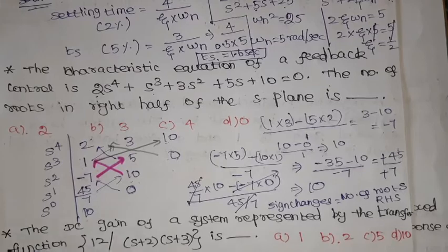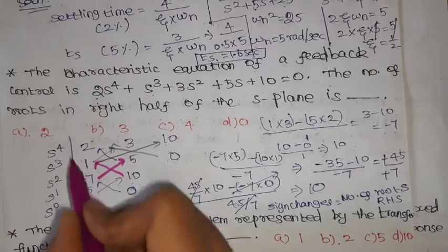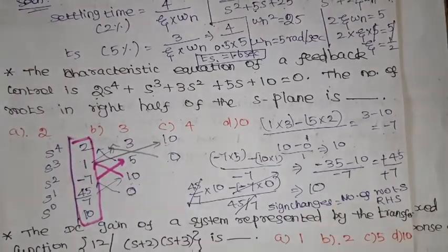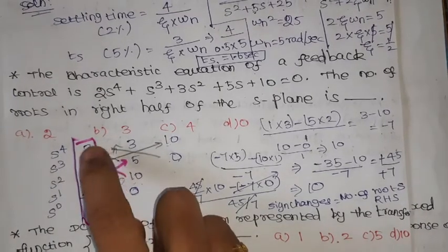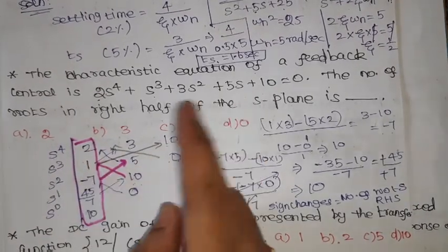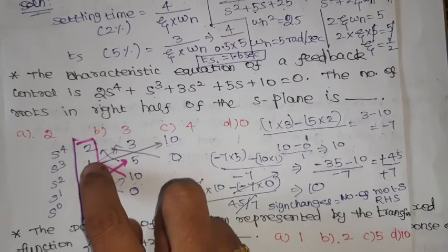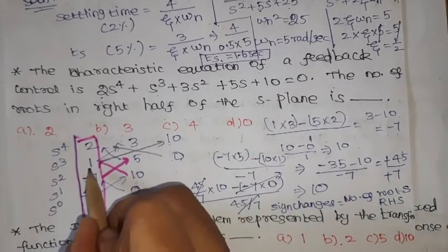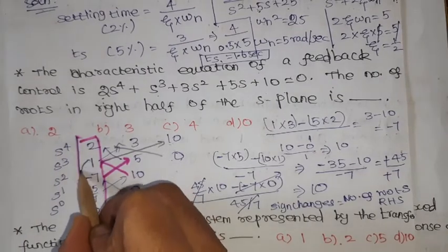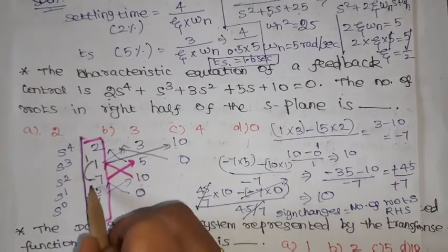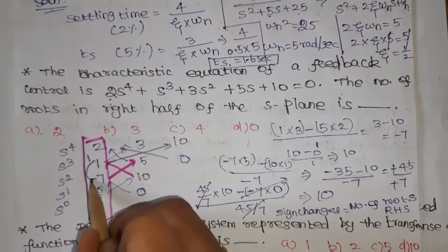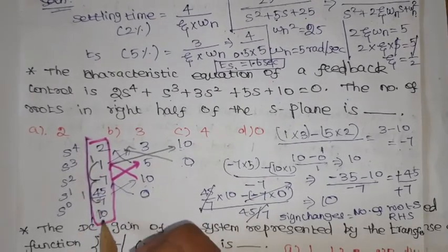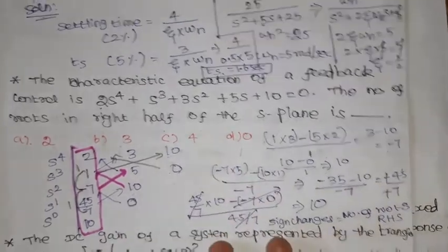Looking at the first column only: the values are 2, 1, −7, 45/7, and 10. From 2 to 1: positive to positive — no sign change. From 1 to −7: positive to negative — one sign change. From −7 to 45/7: negative to positive — another sign change. From 45/7 to 10: positive to positive — no sign change.